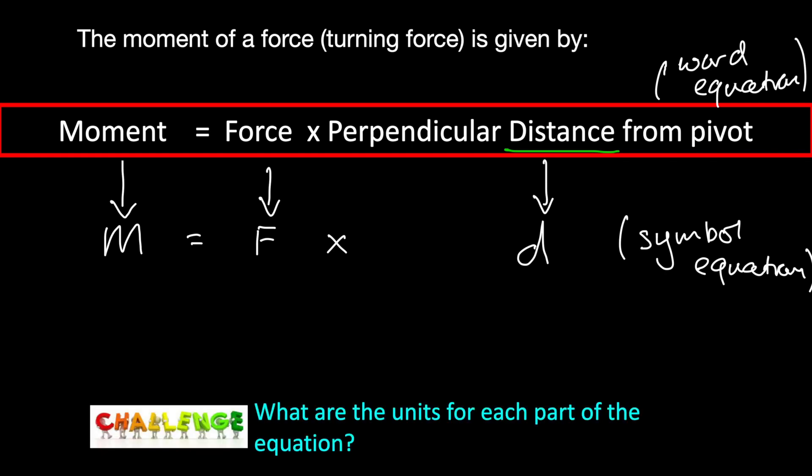Now, because the unit for distance we know is meters, and we also know that the unit for force is newtons, what do you think the unit for moment is? Think and have a go first. So, the unit for moment is simply a combination of newtons and meters: just newton meter.